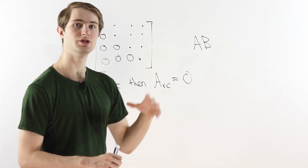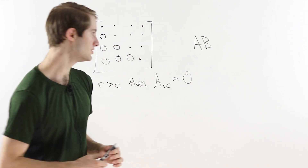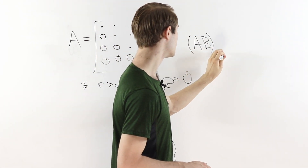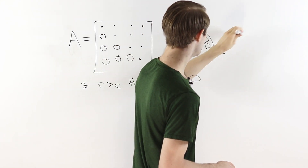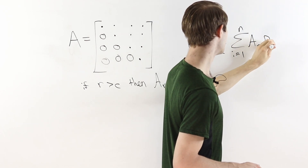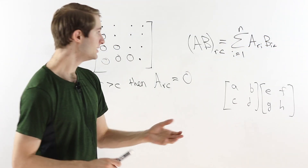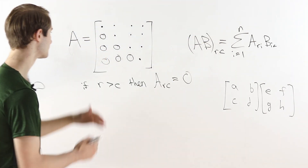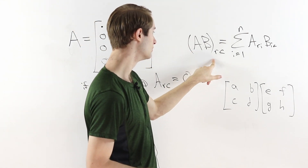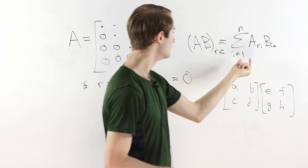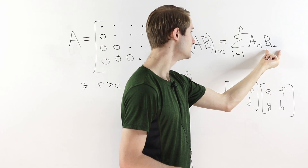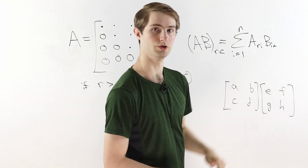We can approach this using the explicit formula for matrix multiplication. To find the entry at row R and column C in the product AB, we take the sum from I equals 1 to N of A_(R,I) times B_(I,C), where N is the size of the square matrices. We keep the row fixed for A, keep the column fixed for B, and move down the columns of A and down the rows of B.